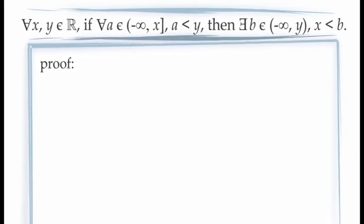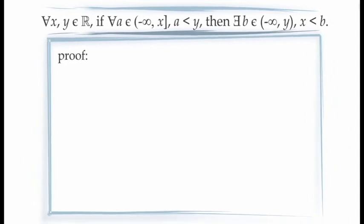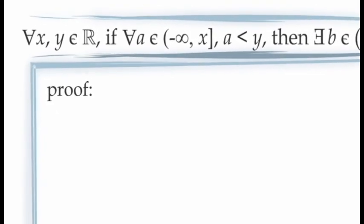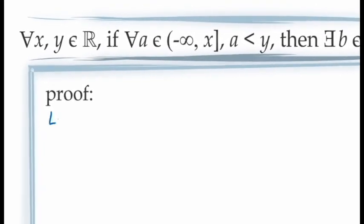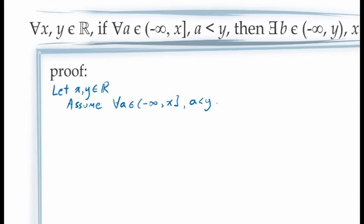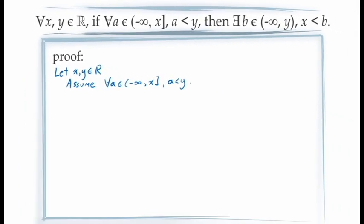For practice, we're going to prove this statement in two different ways: first using a direct proof, and second using a proof by contraposition. To begin, since we're proving this statement for all values of x and y in the real numbers, we need to let x and y be arbitrary real numbers. If we're using a direct proof, we need to assume the full antecedent of our conditional statement — that for all values of a in the closed interval from negative infinity to x, a is less than y.